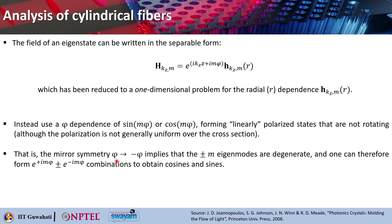In this case, the mirror symmetry — that is, phi can be replaced by minus phi — implies that plus/minus m eigenmodes are basically degenerate. One can therefore form e^(+imφ) ± e^(-imφ) combinations that can give you cosines and sines. As mentioned earlier, m is basically called angular momentum, in analogy to quantum mechanics where the angular momentum L_z of such a wave function is basically ℏm.